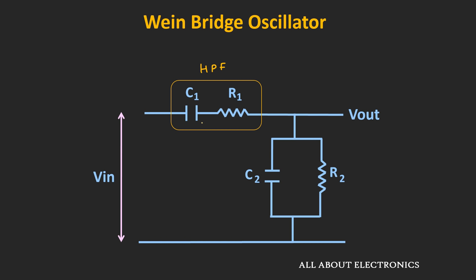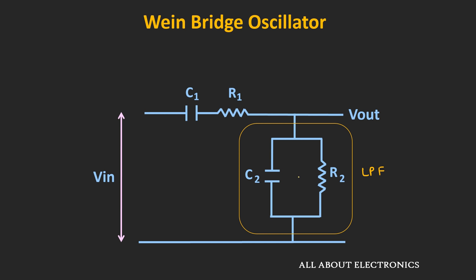At low frequencies, the capacitor acts like an open circuit, so it does not pass the low-frequency signals. On the other hand, at high frequencies, the capacitor provides very low impedance, so it easily allows the high-frequency components — acting like a high-pass filter. For the parallel RC circuit, at low frequencies the capacitor acts as an open circuit, so the output voltage will appear across resistor R2. At very high frequencies, the impedance of the capacitor will be very low, so the output will get short-circuited to ground — making this parallel RC network act like a low-pass filter.